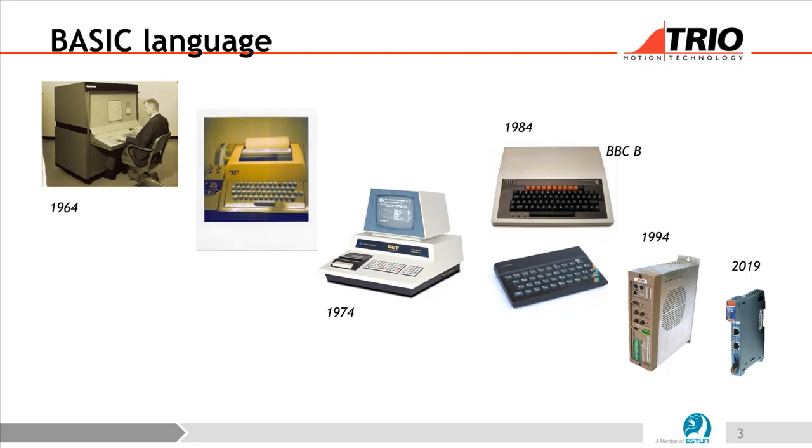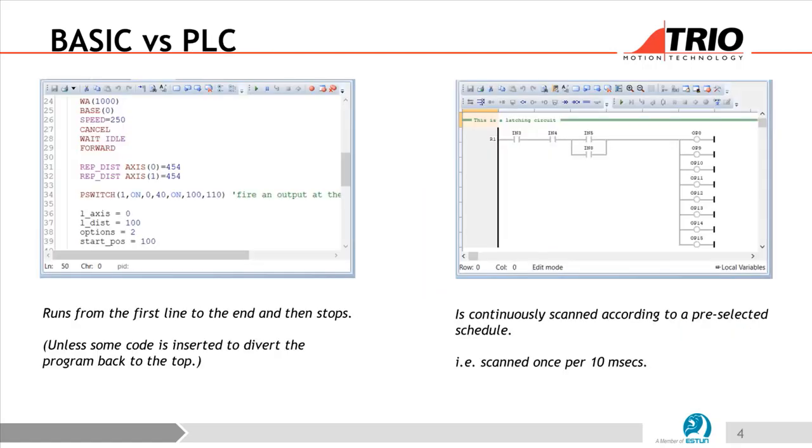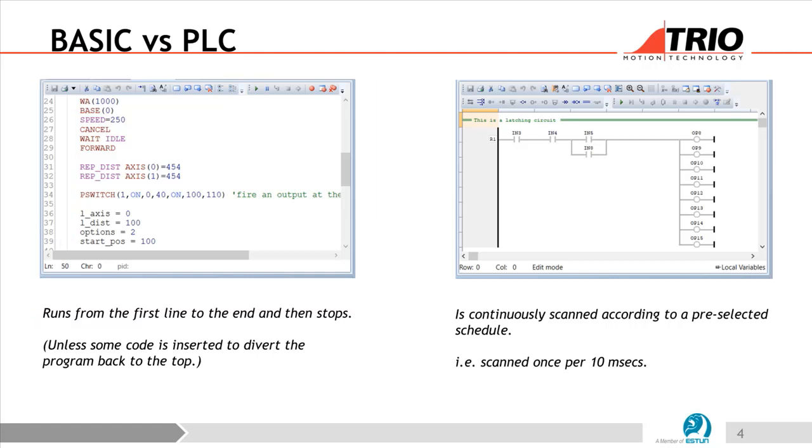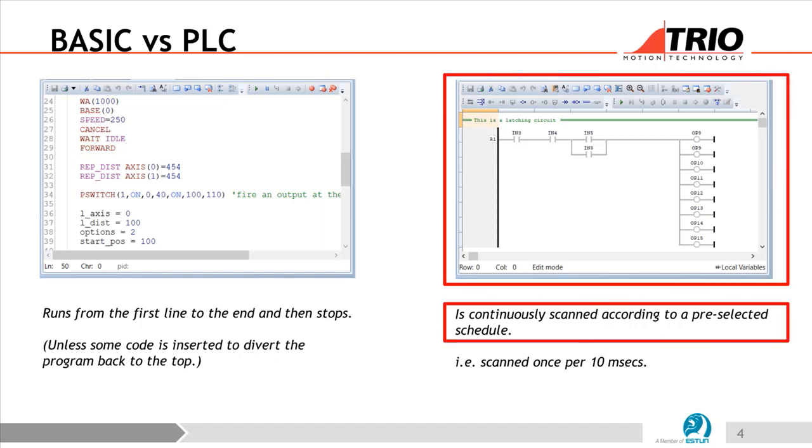A little bit on how BASIC language works versus the PLC. For the BASIC language, it runs from the first line to the end and then stops, unless some code is inserted to divert the program back to the top or to some other programs. It scans only one time. But in the PLC, it's continuously scanned until you set a timeline when it should stop scanning. Usually scans every 10 milliseconds.